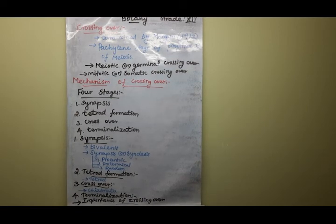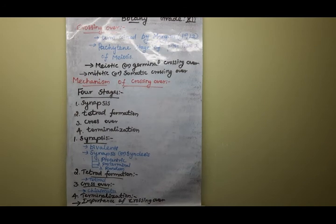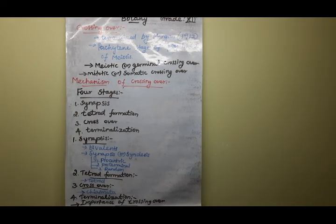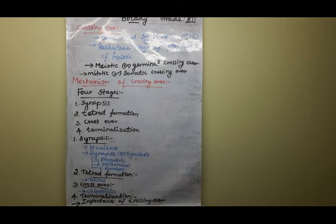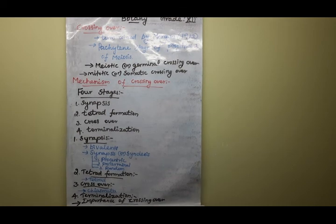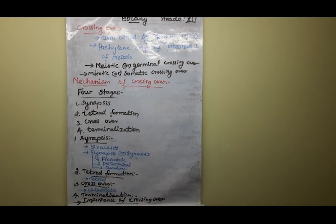Another importance: crossing over helps to understand the mechanism of gene action — how gene mechanisms work. Finally, crossing over produces useful new recombinant varieties. These new recombinant offspring can be used in plant breeding, where we can obtain very useful new combinations and products.